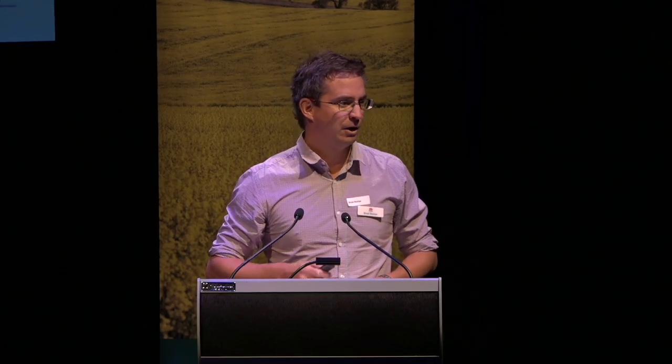Now, fungicides. Fungicides are an important tool but it's the way we use them, and they are very effective at reducing yield loss. This is from trials conducted in 2020 and 2021, with a dryland and an irrigated treatment. The irrigated treatment was supplementary irrigation used to drive humidity and leaf wetness, replicating a higher rainfall zone. Under a fungicide management program as opposed to a nil treatment, you can protect between 19 and almost 50% of your yield — so they are effective.